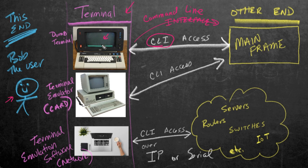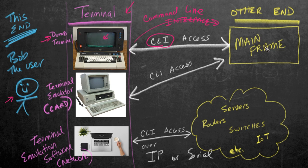Now this device is actually called a terminal. In fact, it's often called a dumb terminal, because all it would do is allow Bob the user to input information there — it would actually be processed on the mainframe and then sent back over the special cabling for this terminal. Also think of a terminal like the end of the road — that's the end of this conversation, the terminal, and the other end is the mainframe itself. So the benefit of a dumb terminal is to get access to the mainframe via command line interface commands that you type in and get responses back.